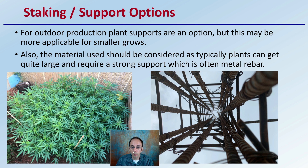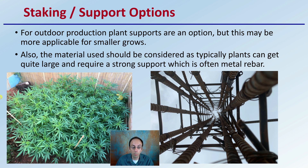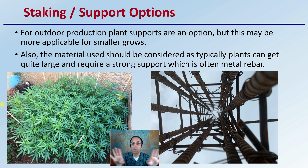Lastly, staking or plant support structures. For outdoor production, plant supports are an option, but this may be more applicable to small growers. The material used should be considered, as plants can get quite large and require strong supports — often metal rebar. It can also depend on your pruning style. If you're growing at large scale, you may not be doing a lot of pruning, but in a smaller outdoor operation, pruning might be an option. Screen of green might be another worthwhile consideration, where you lay out trellis netting allowing plants to grow up, maximizing production per plant while also providing physical support.